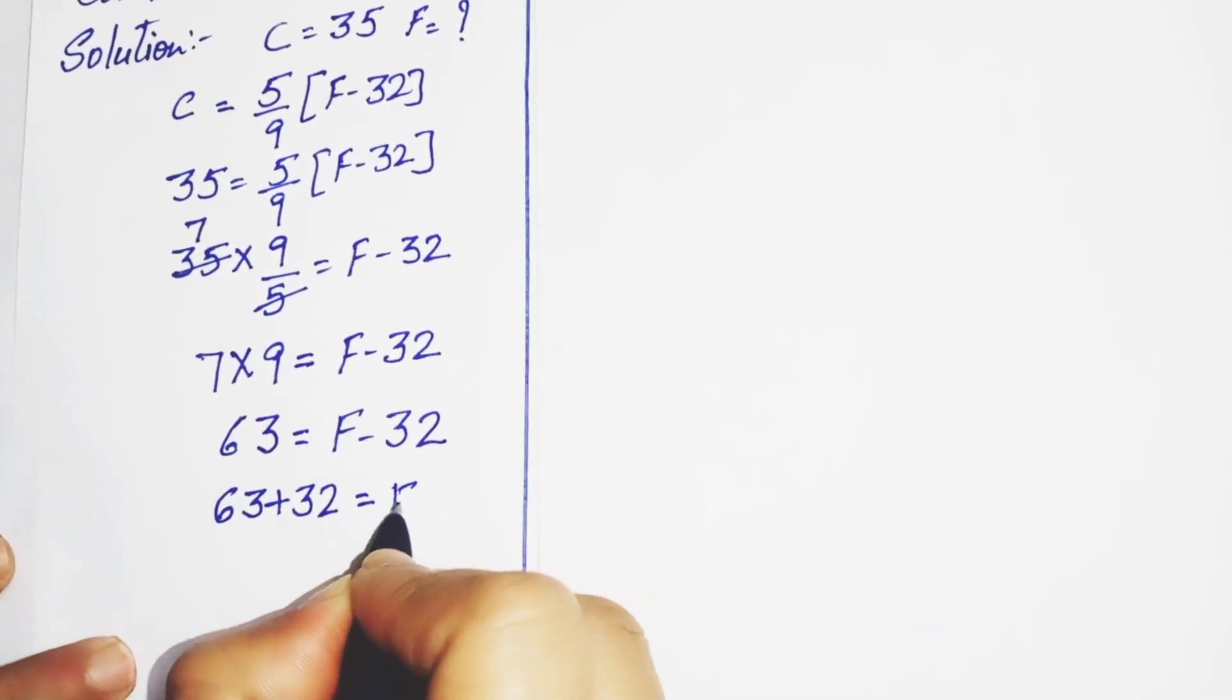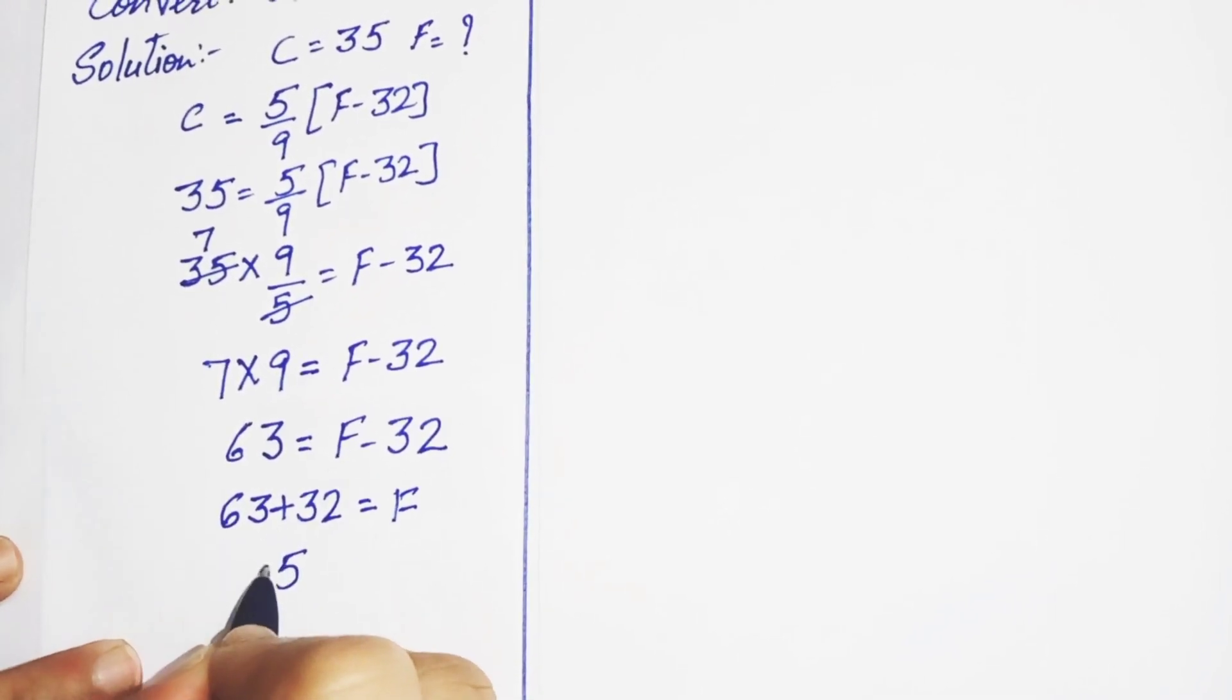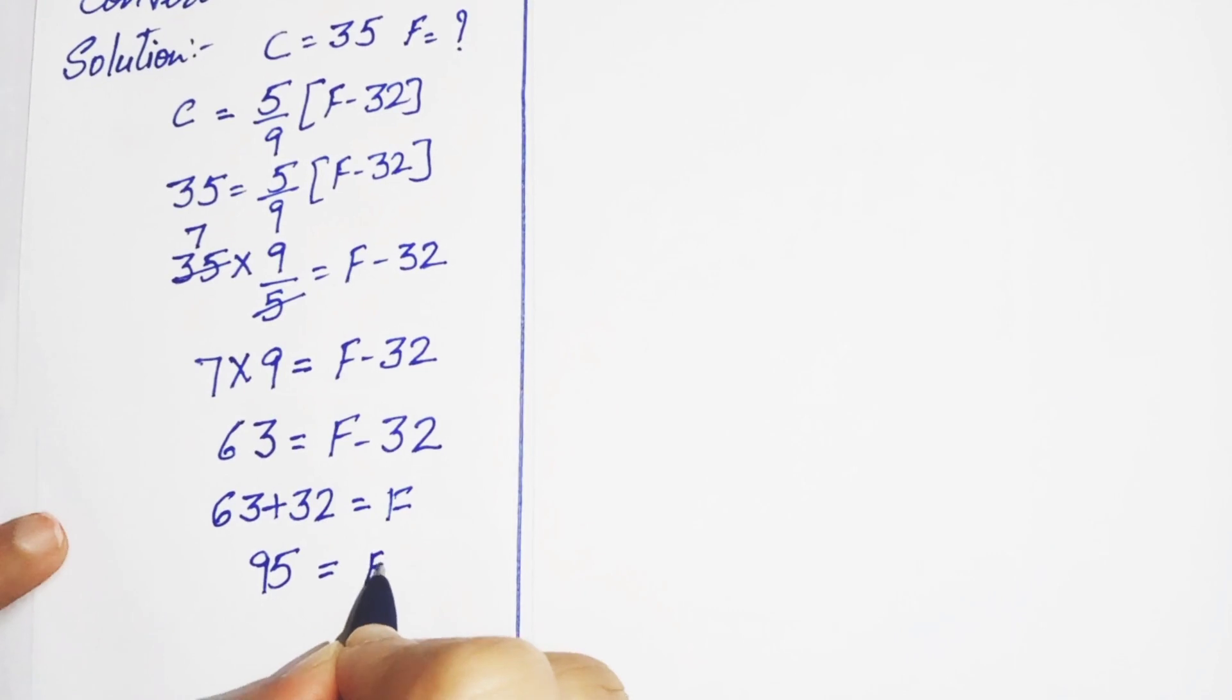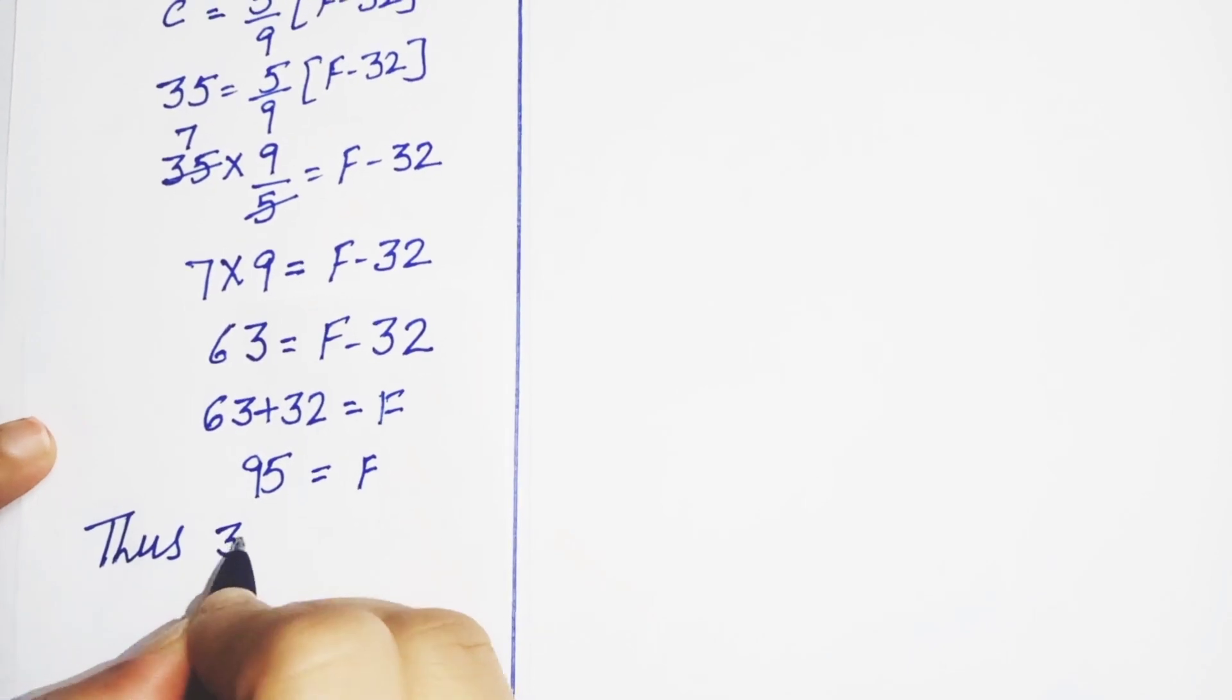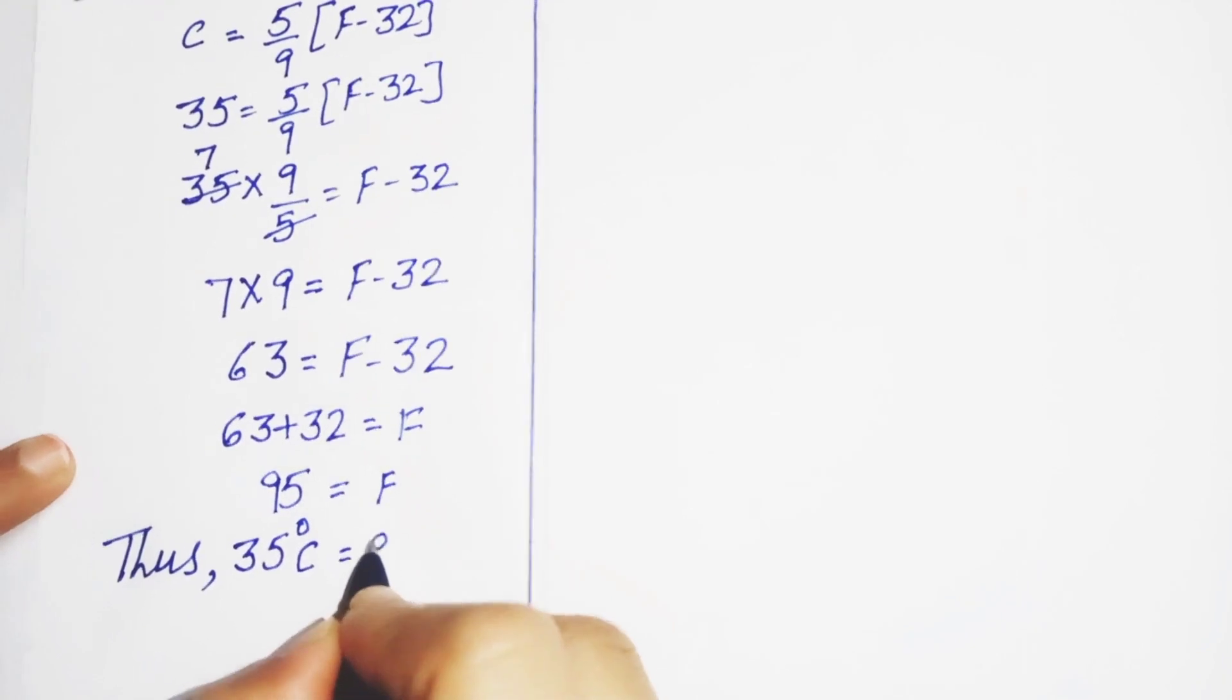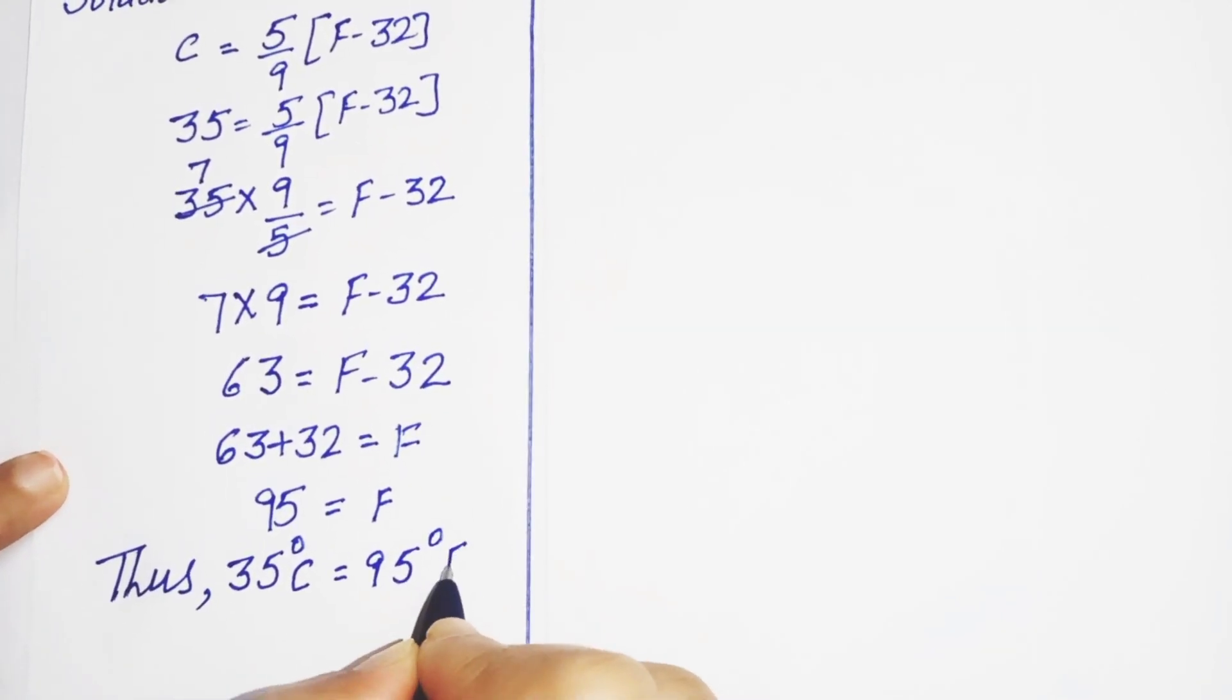We get 95. Thus 35 degree Celsius is equal to 95 degree Fahrenheit.